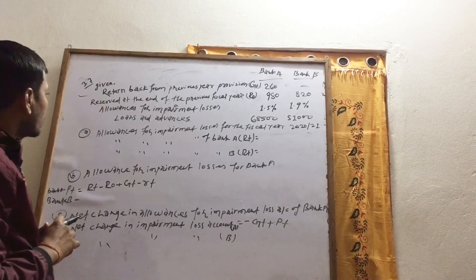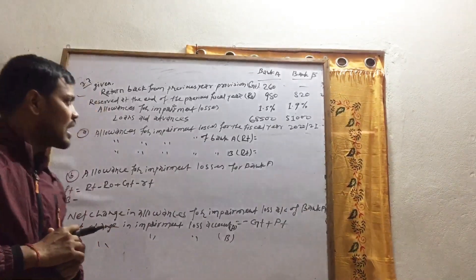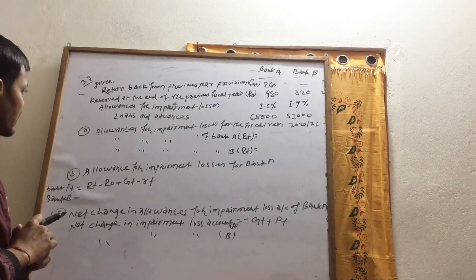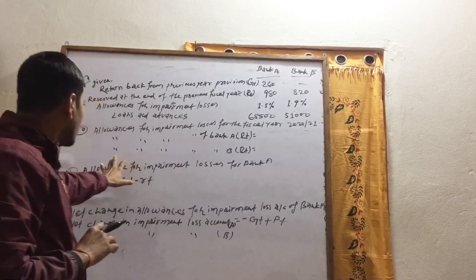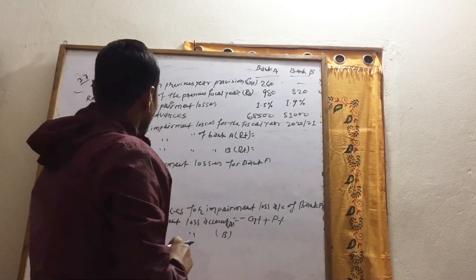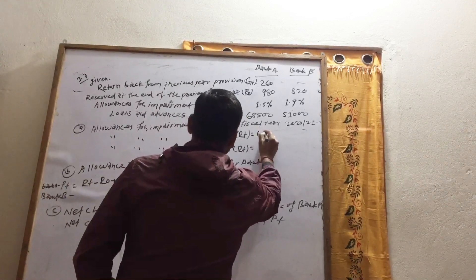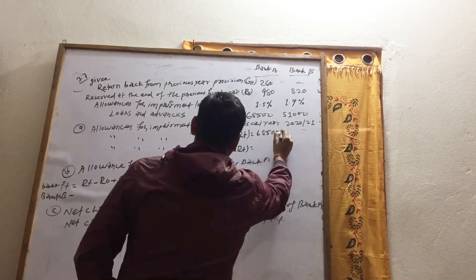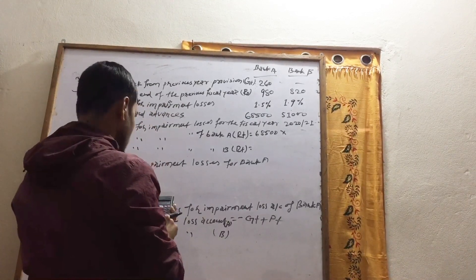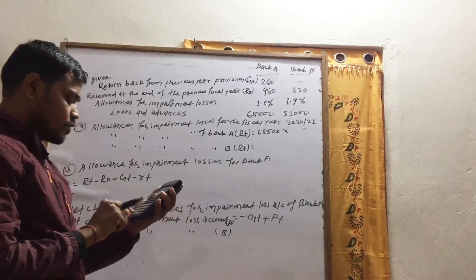For the previous fiscal year, the Bank A losses for impairment losses will be maintained. The formula is: RT equals the bank A requirement. The amount of loans and advances is $850 million — wait, $5,100 million — and this is about 1.5%, i.e., multiplied by 0.015.